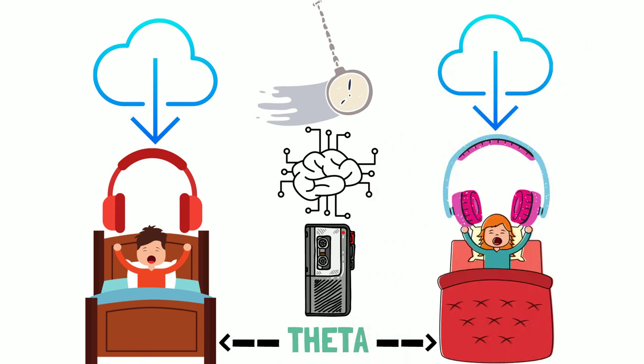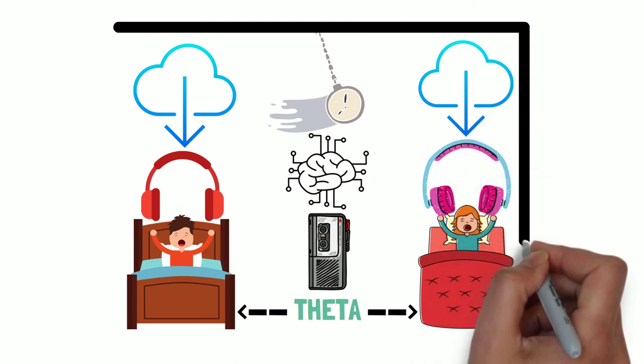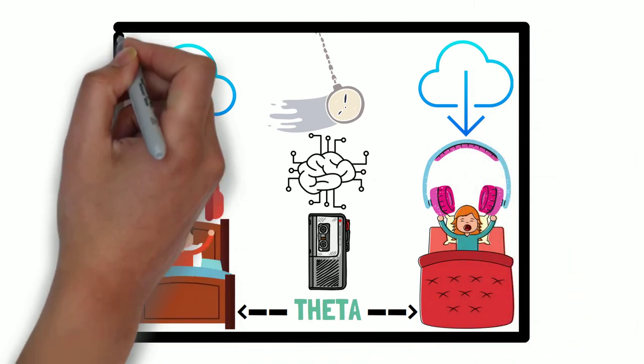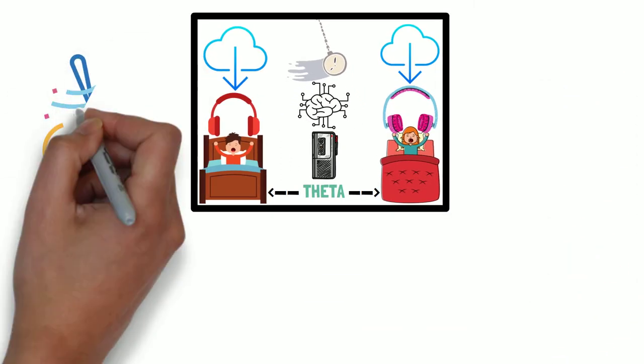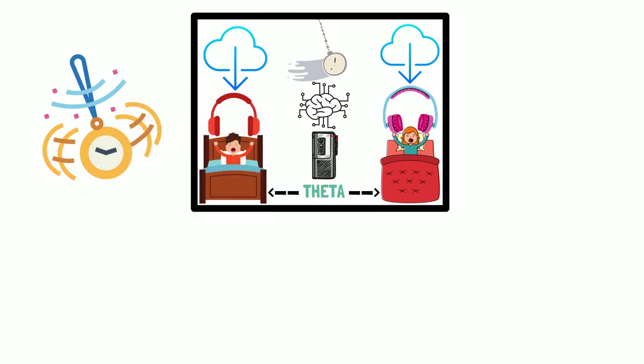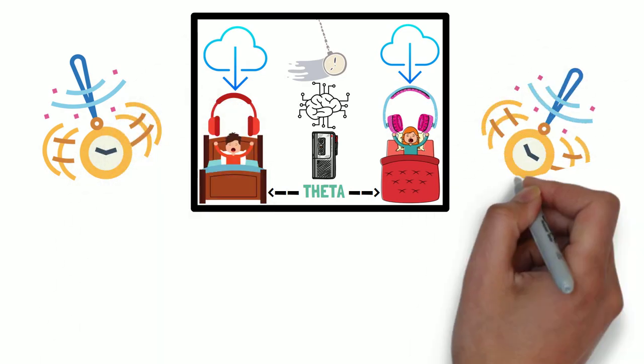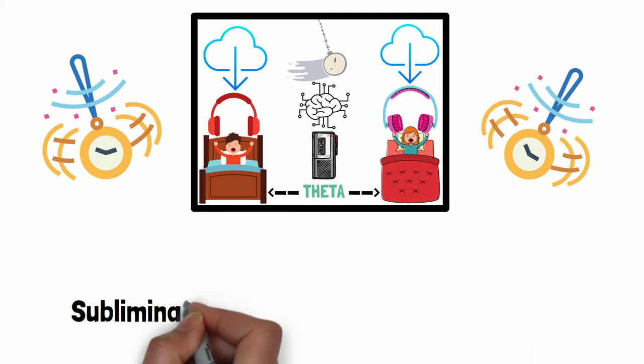So if you want to change a program, you can select a tape that will have the program that you desire to put into your mind. And every night as you go to bed, just put the earphones on and you will be in a process of self-hypnosis.